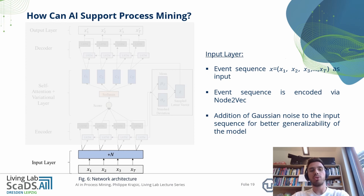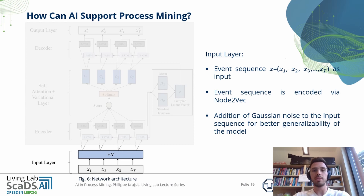Now I want to describe the neural network — the basic filter architecture. For the input layer, we have an event sequence X as input. This event sequence is represented by a case and is encoded via a very efficient Node2Vec encoding. In addition to that, we added some Gaussian noise to the input sequence for better generalizability of the model. The Gaussian noise is added only during the training phase, making the model less fit to the training data and increasing generalizability.